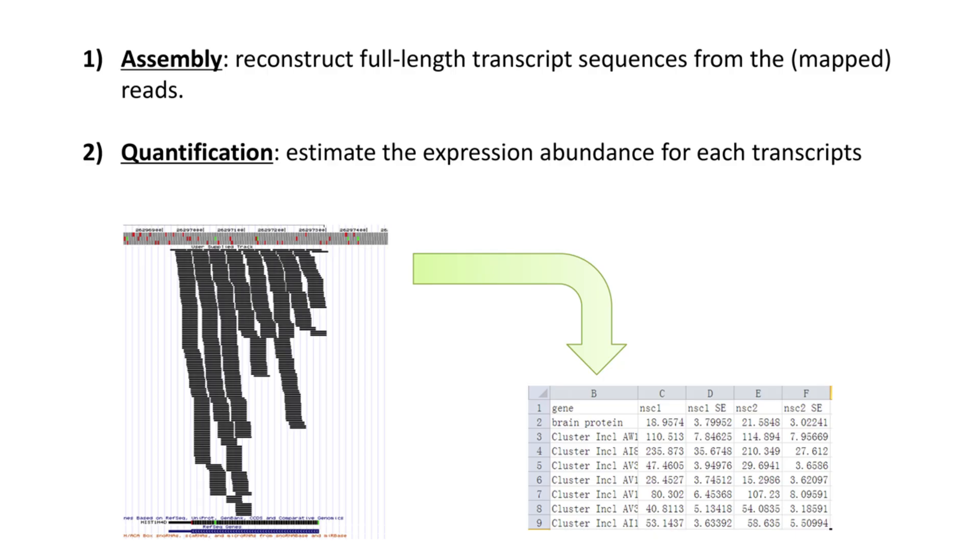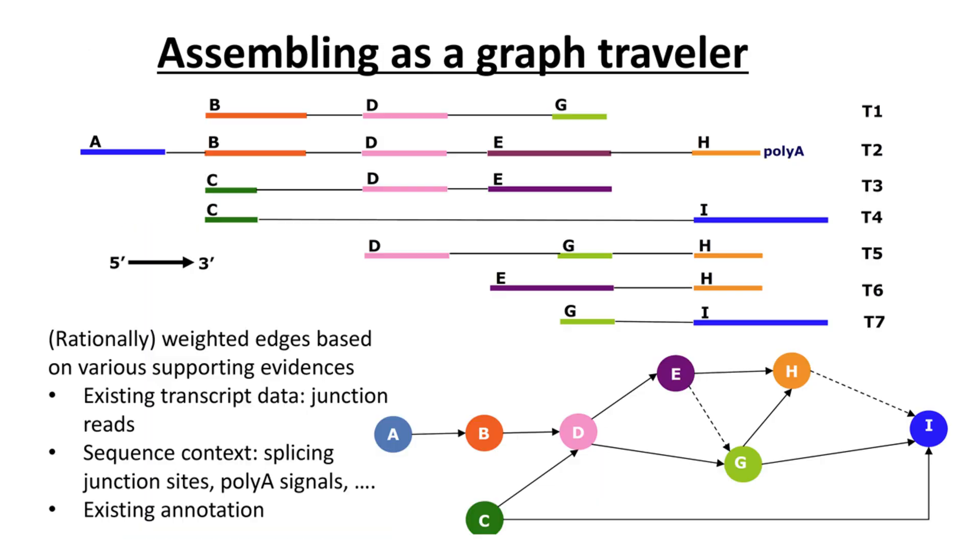Mapping is only the first step of RNA-Seq data analysis. We still need to assemble these reads into transcripts and estimate their expression levels. After correctly mapping all reads, including junction reads, we can interpret the transcript assembly problem as a traverse problem on a directed graph. We can use the path finding algorithm from graph theory to find one or more optimal paths and their corresponding transcript sequences under the constraint where different edges are assigned with different weights.